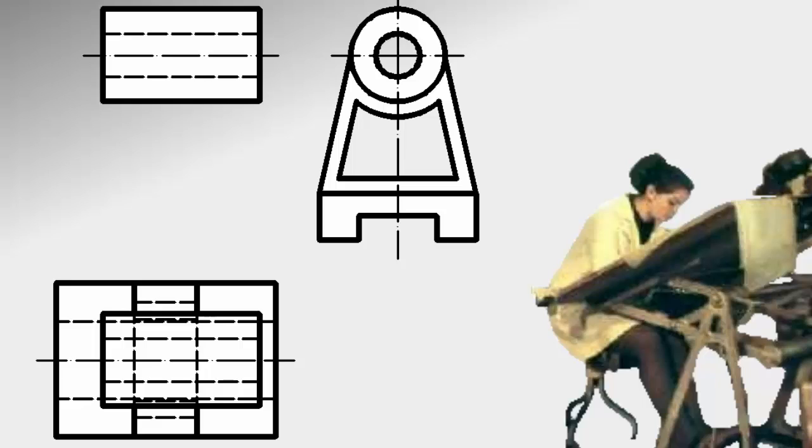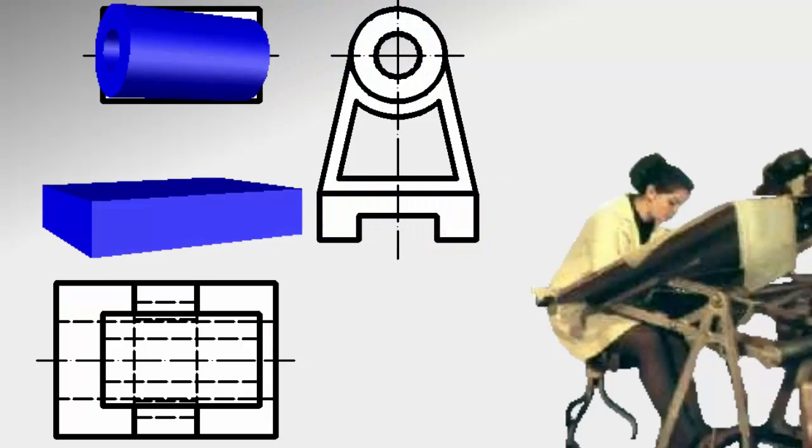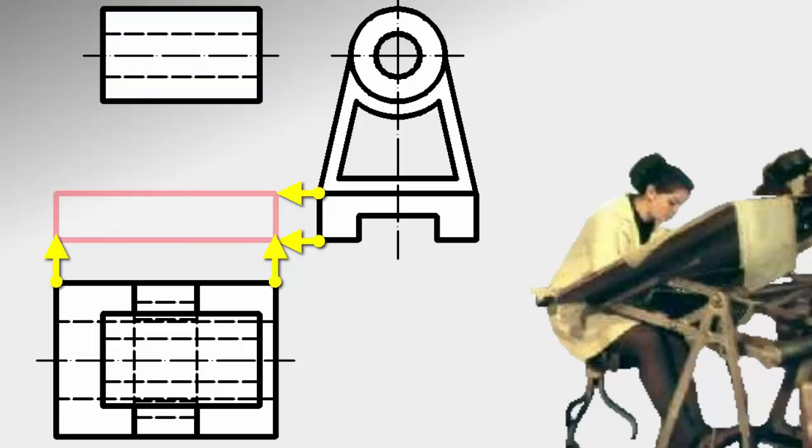We move to another volume easy to interpret. At the bottom we see a rectangle profile. That taken to the plant corresponds with another rectangle. Then it is a box or cuboid. With the profile height and length of the plant, we get your elevation as another rectangle.